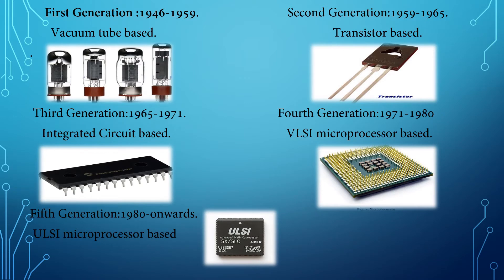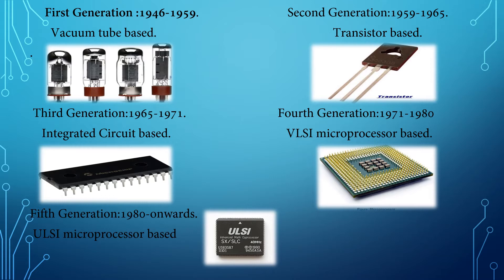We will cover the five generations: the first generation from 1946 to 1959, which was vacuum tube based; the second generation, which was transistor based; the third generation, which was integrated circuit based; the fourth generation, which was VLSI microprocessor based; and the fifth generation, which was ULSI microprocessor based.